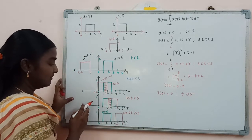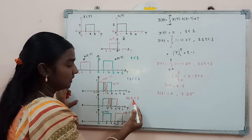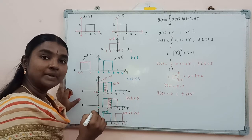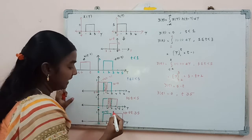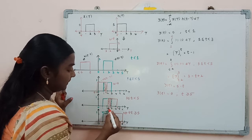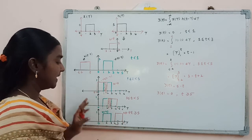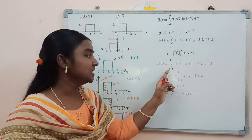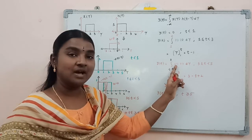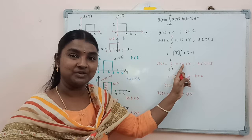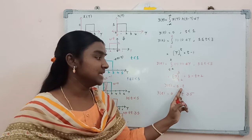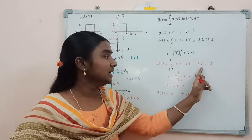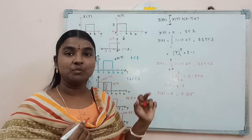Moving to the next graph, in the period 3 ≤ t < 5, we observe an overlapping area. The common integral limits for both signals are from t-2 to 3. With x(τ) amplitude 1 and h(t-τ) amplitude 1, performing the integration gives y(t) = 5 - t in the period 3 ≤ t < 5.